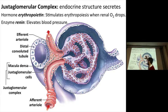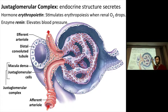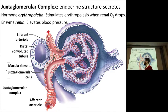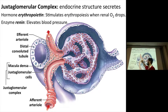Here's the capsular space, the urinary pole, tubular fluid coming out. This tube goes into the proximal convoluted tubule, down the loop of Henle, back up to the distal convoluted tubule before passing into the collecting duct. The distal convoluted tubule, before it passes into the collecting duct, has a loop that passes back by the renal corpuscle, back by the glomerulus. At this junction point is this aggregate of endocrine cells that we call the juxtaglomerular complex.